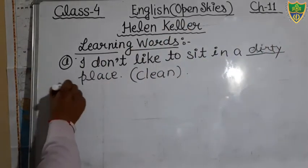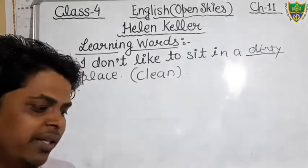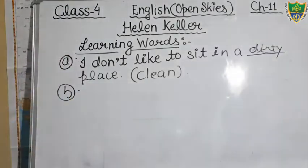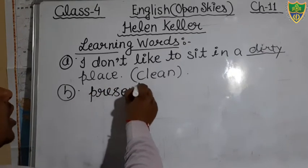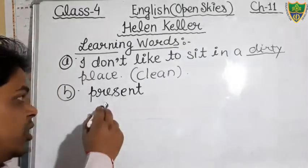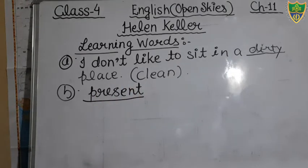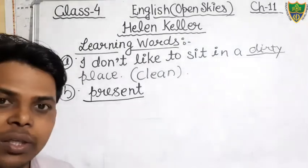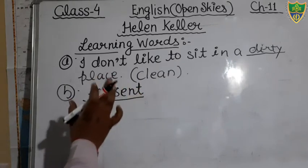Question number B: 'Everyone who is blank here should listen carefully.' The word given in the bracket is 'absent.' The opposite of absent is 'present,' P-R-E-S-E-N-T. You will fill the word present: 'Everyone who is present here should listen carefully.' Present is the most appropriate and suitable word for question number B.